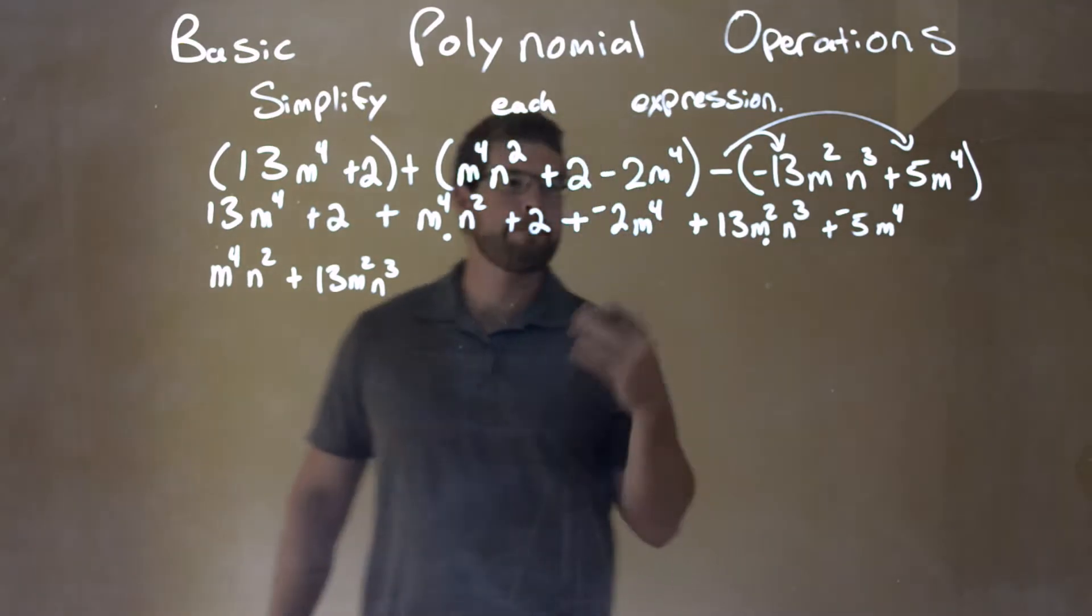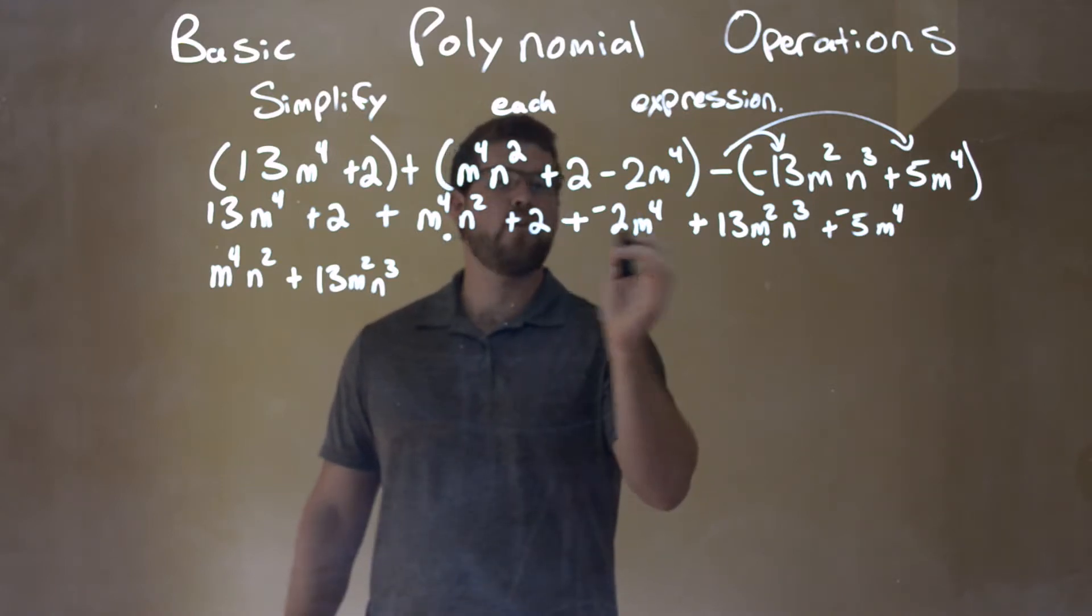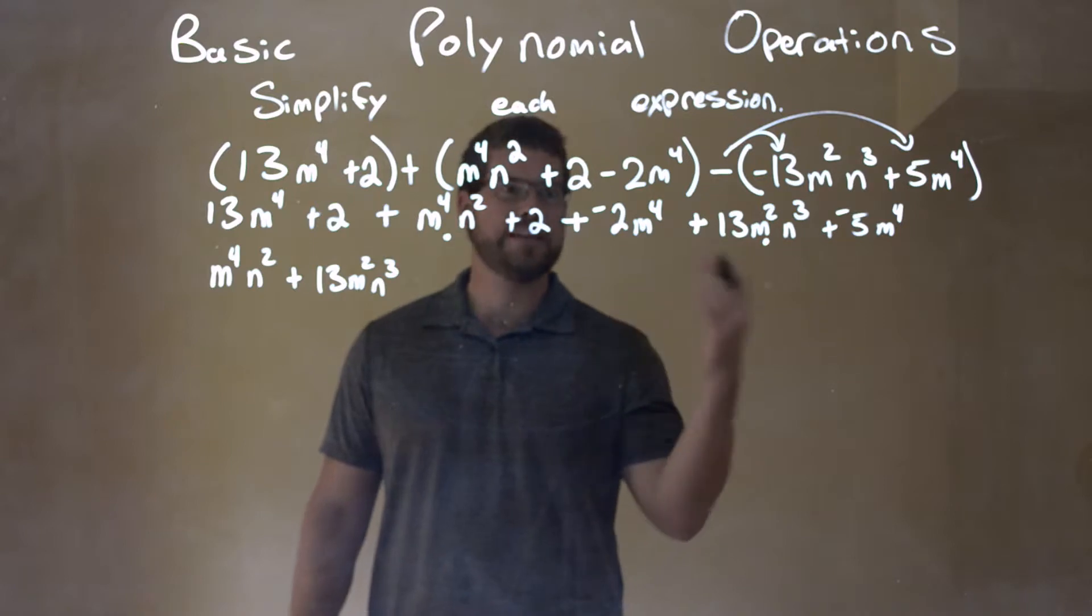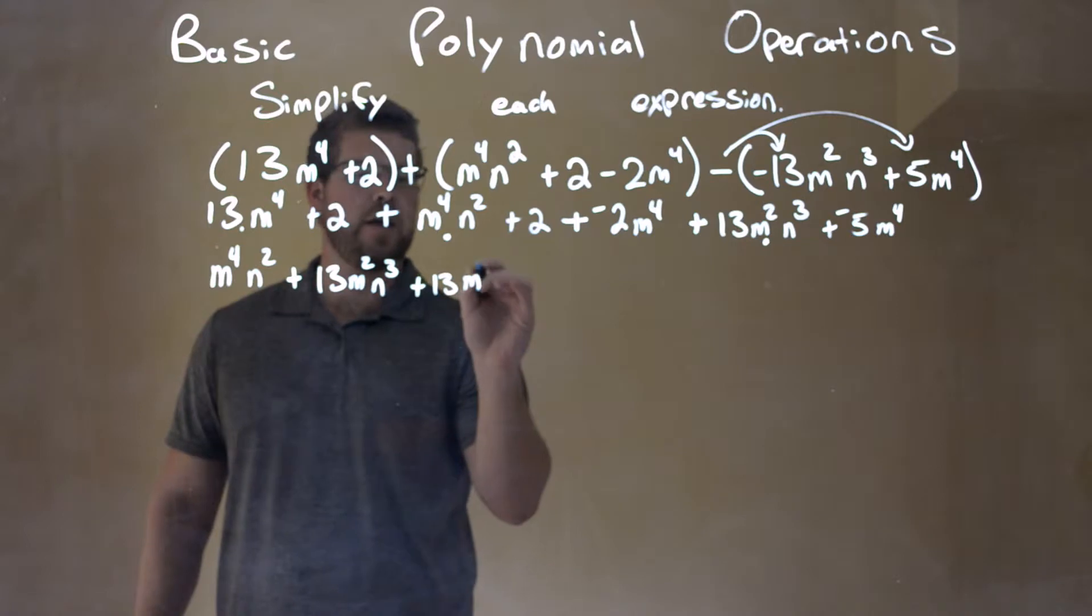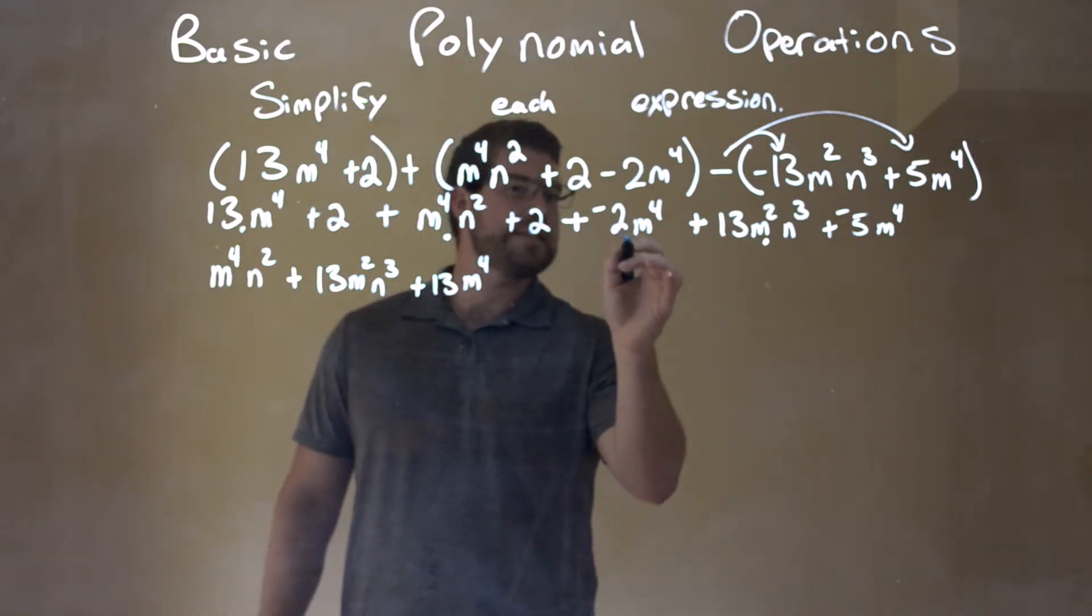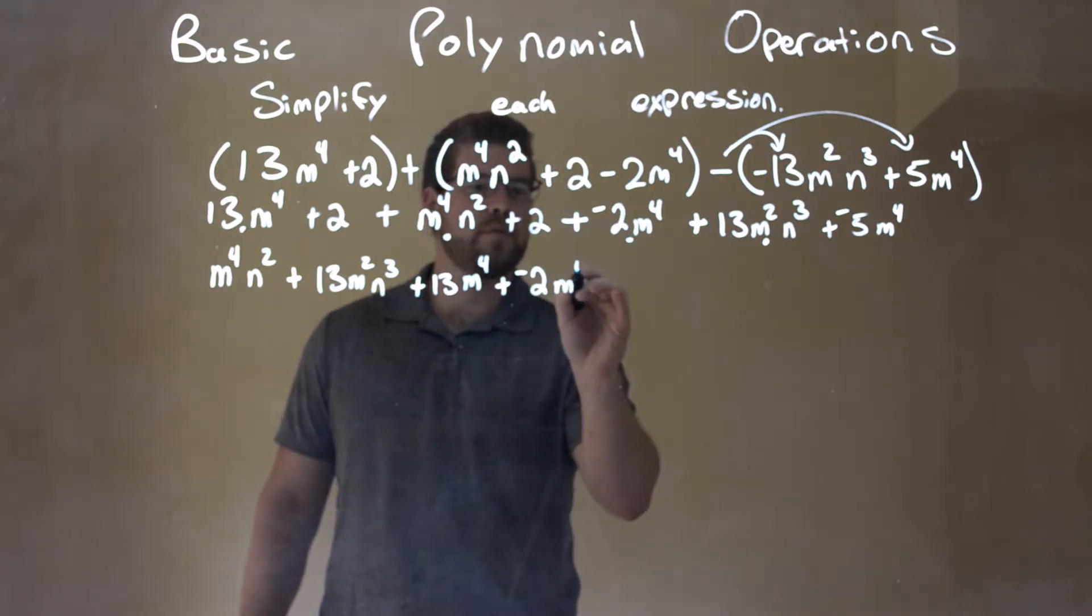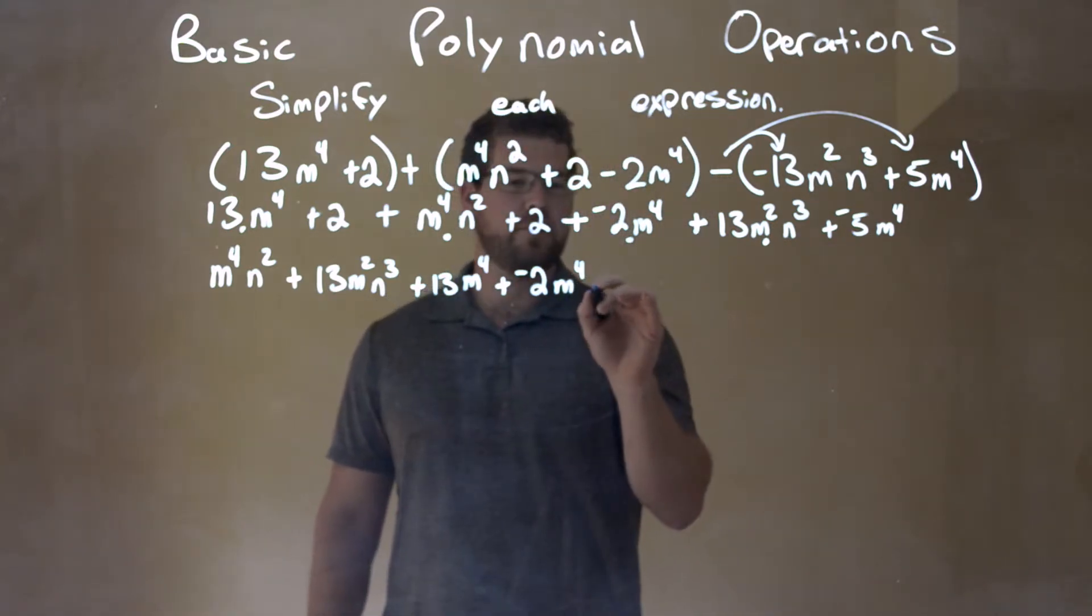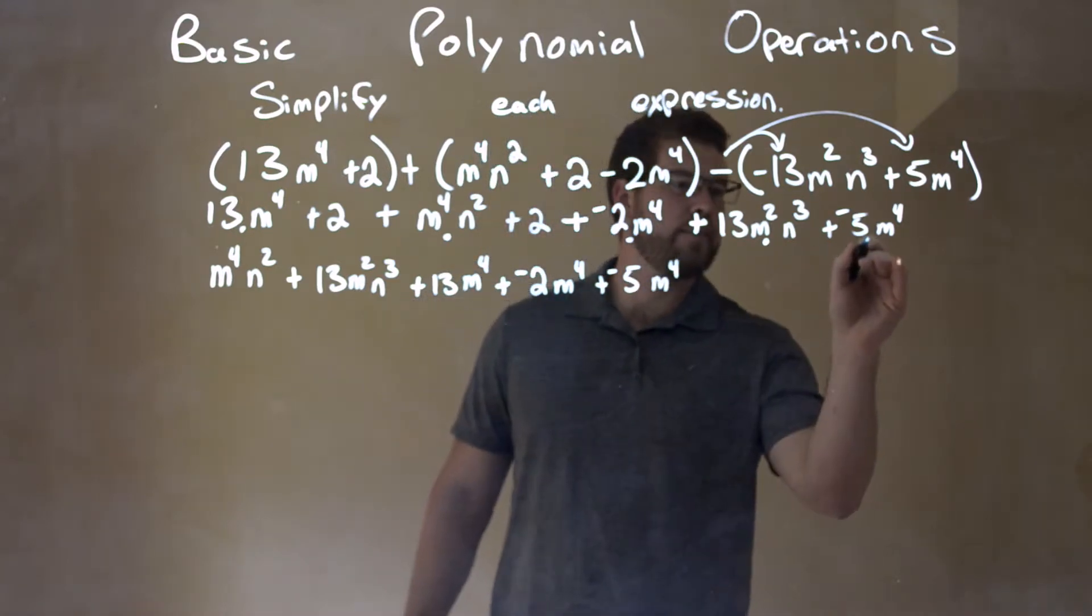From there, mark that. Let's go to the next one down the line. Next thing I see, I see a lot with the fourth power. So I'm just rearranging here. I'm not necessarily simplifying together. Let's bring this one down, plus 13m to the fourth. Got that one. The next one I see is this one, plus a negative 2m to the fourth. Got that down. And then the last one here, the negative 5m to the fourth. So plus a negative 5m to the fourth. Brought that down.